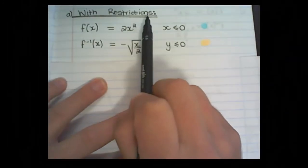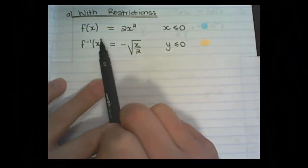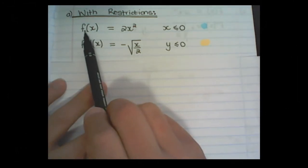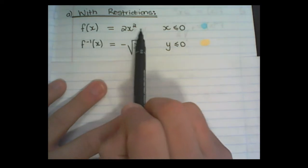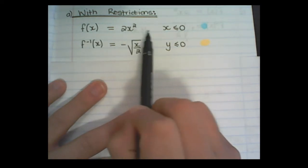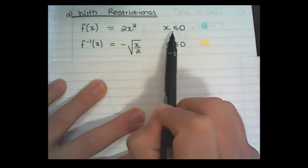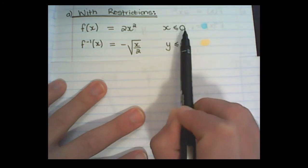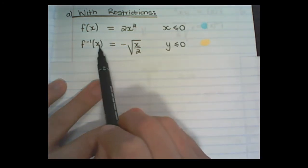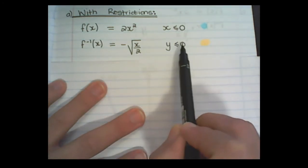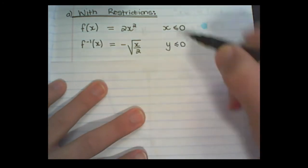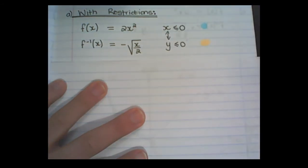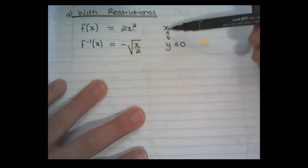With restrictions, the inverse function can become a function. If I consider the same graph of f(x) equals 2x squared and restrict the values of x to values that are smaller or equal to 0, then the inverse function will have values of y smaller or equal to 0. Remember, in the inverse function, the x and y swap positions.